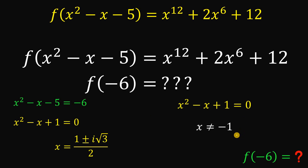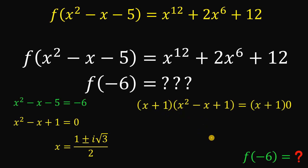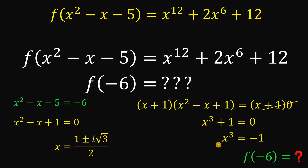Going back to x squared minus x plus 1 equals 0, we note that x is not equal to negative 1 — since x equals (1 ± i√3)/2 — meaning x + 1 is not equal to 0. Because x + 1 ≠ 0, we can multiply both sides of the equation by (x + 1). The product (x + 1)(x² - x + 1) equals x³ + 1, and since the right side is 0, we get x³ + 1 = 0, so x³ equals negative 1.